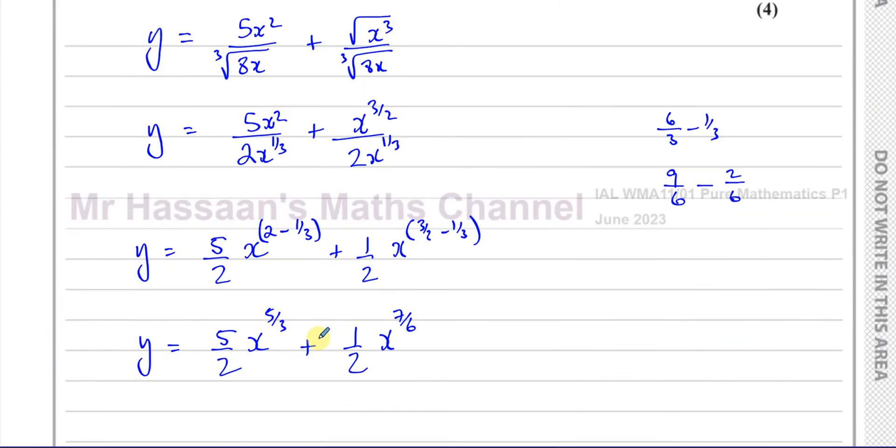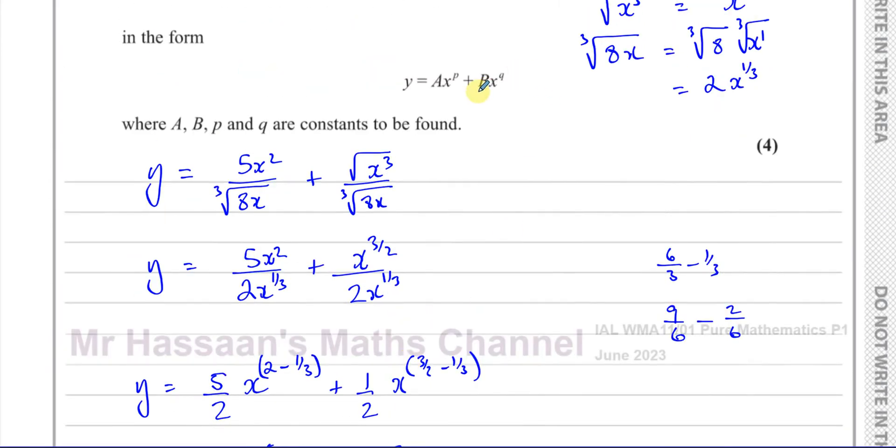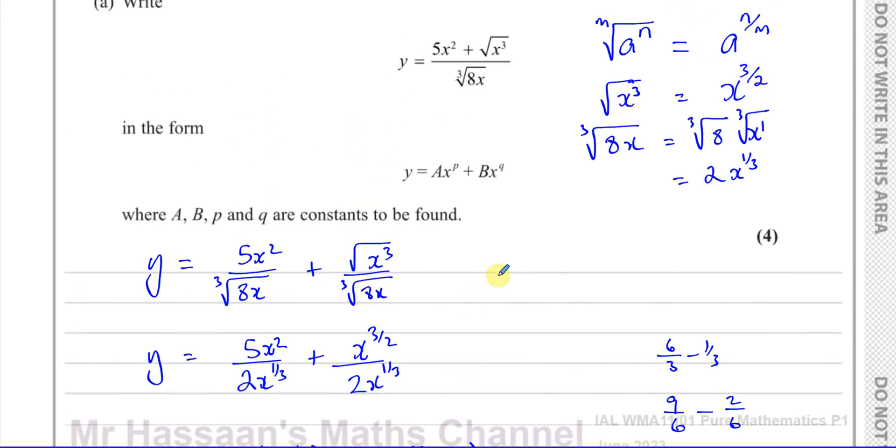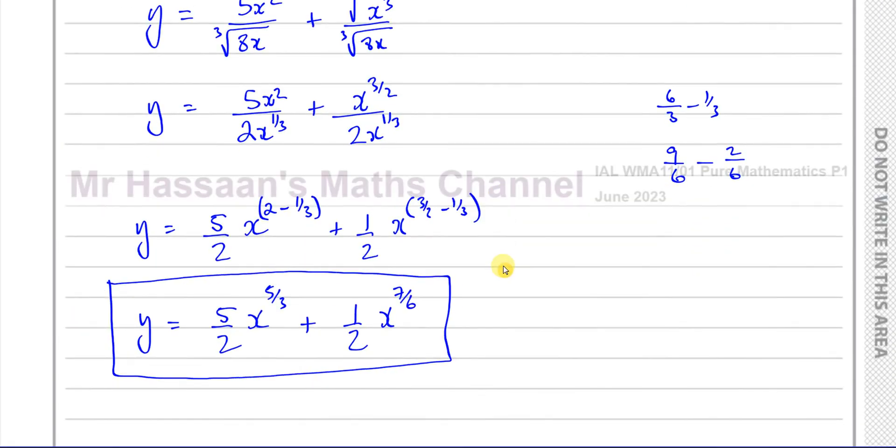So, a is 5 over 2, b is a half, p is 5 over 3, and q is 7 over 6. And there is the answer to the question. So that completes question number 4, part A.